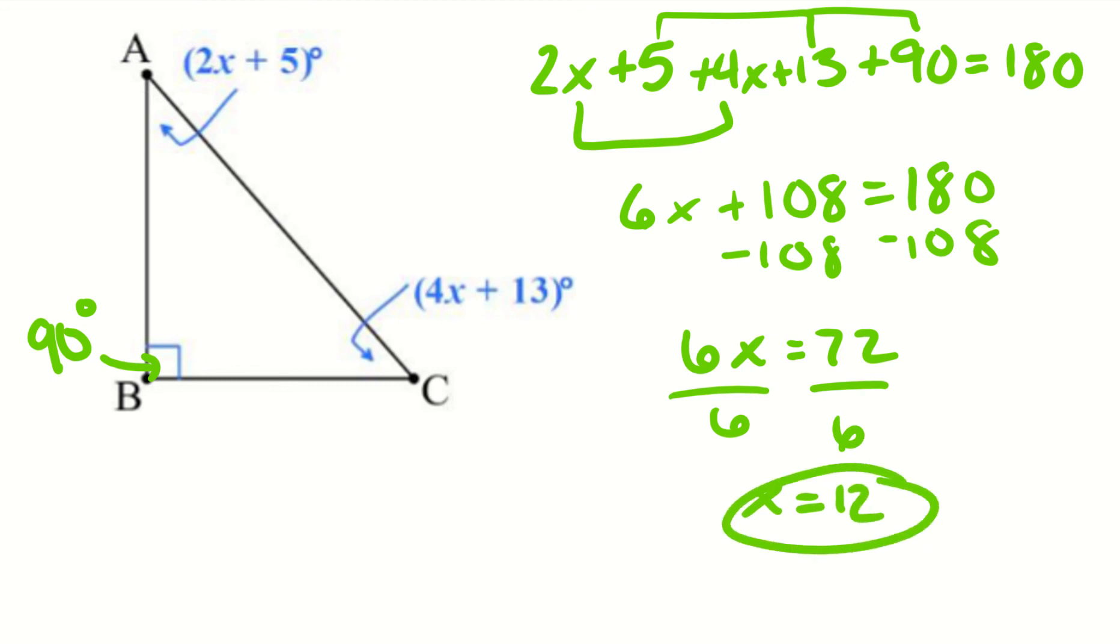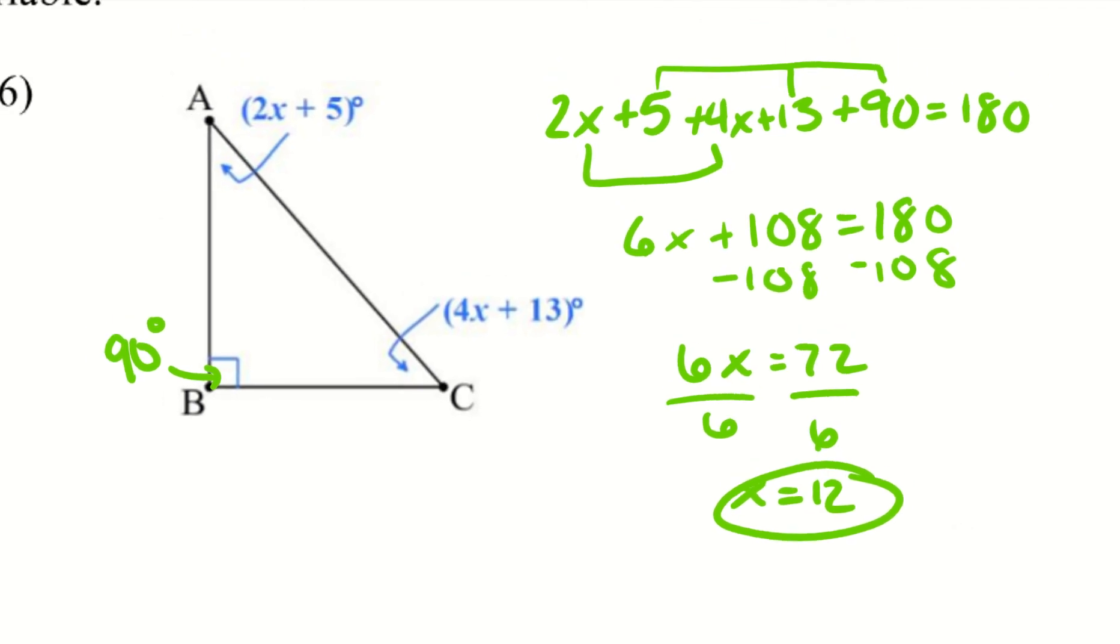Alright, so it doesn't matter how many variables are in there, or of the same variable, we can still solve for that said variable because we know it equals 180 degrees. I want you to go ahead and try number 7. I'll give you a couple seconds to pause the video and try it.